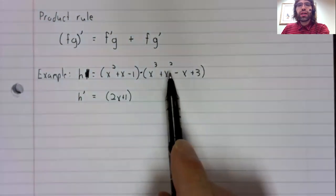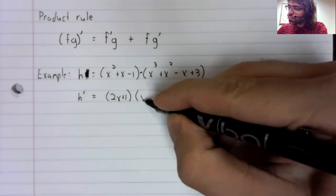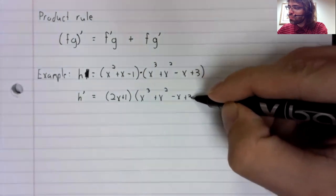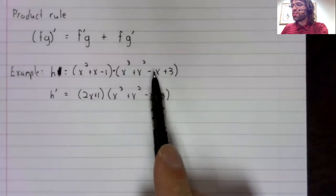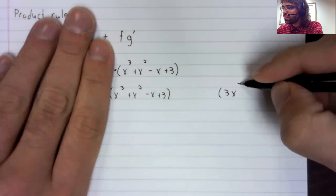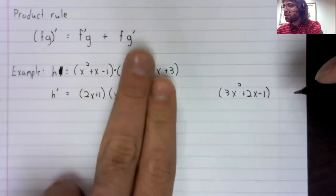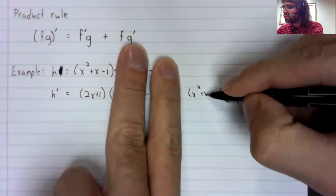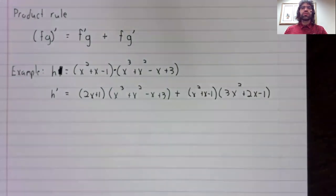The second function, multiply it by this second function. Then take the derivative of this second function. So the derivative of this, multiply it by the first function, and add these products together.